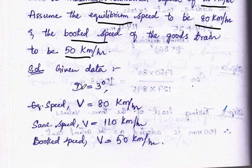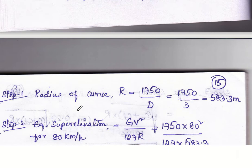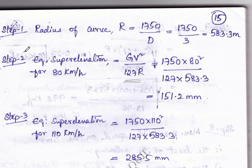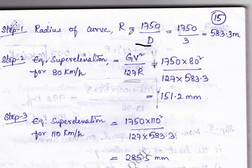The key data is D equal to three degrees, and the three speeds are represented by capital V. The first step is radius of curvature. The formula is capital R equal to 1750 divided by D, which we have used in the last problem as well.